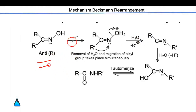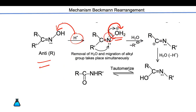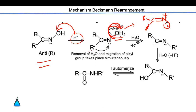Let's see the mechanism briefly. H⁺ is treated with the hydroxy group; OH₂ forms and both electrons are taken by oxygen, giving N⁺. The product formed is R double bond N⁺ with a lone pair and positive charge. Now, simultaneously, OH leaves and R migrates — the electrons are accepted by oxygen and R' migrates, generating a positive charge at the carbon.